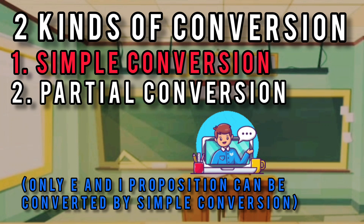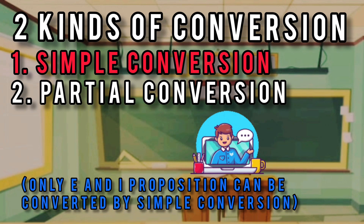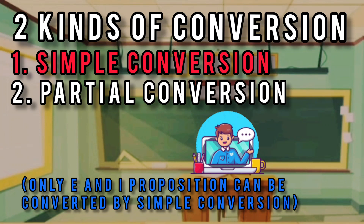If the convertent is particular, the converse must also be particular. If the convertent is universal, the converse must also be universal. That is, in so far as simple conversion is concerned.